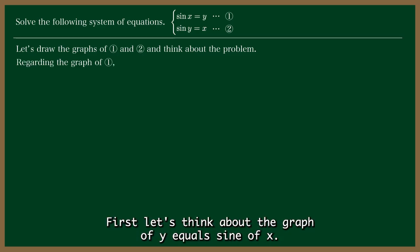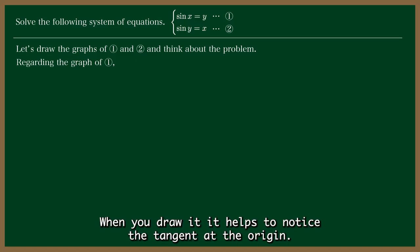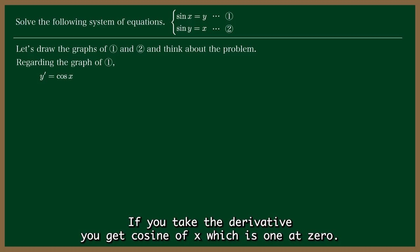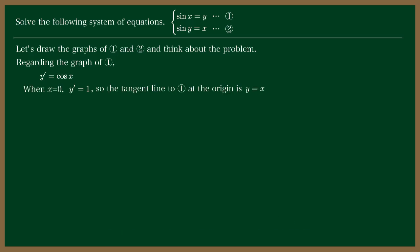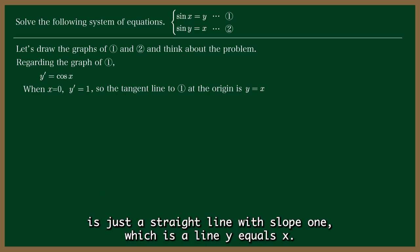First, let's think about the graph of y equals sine of x. When you draw it, it helps to notice the tangent at the origin. If you take the derivative, you get cosine of x, which is 1 at 0. So the tangent line at the origin is just a straight line with slope 1, which is a line y equals x.